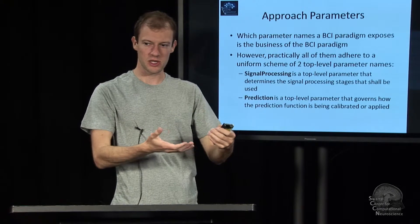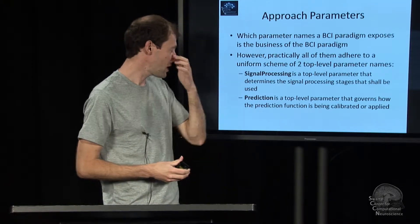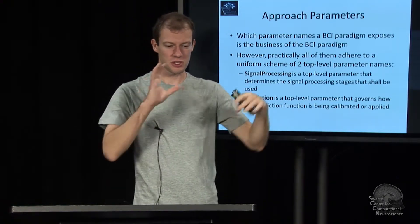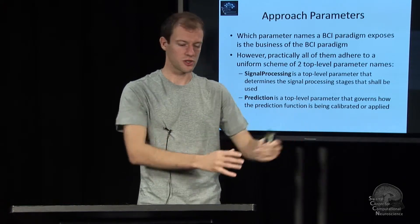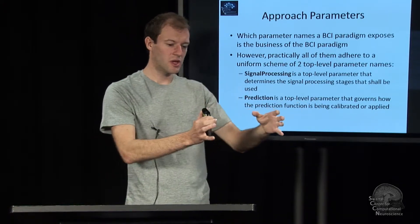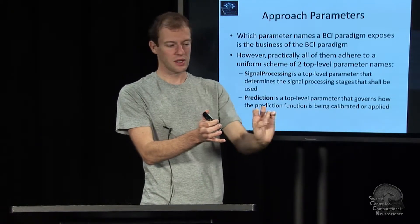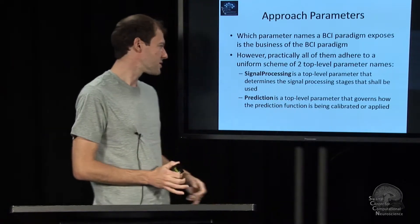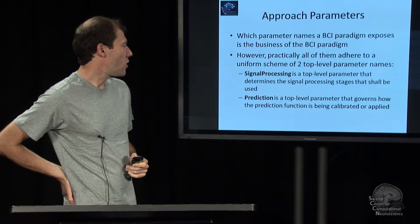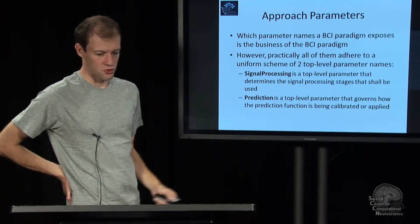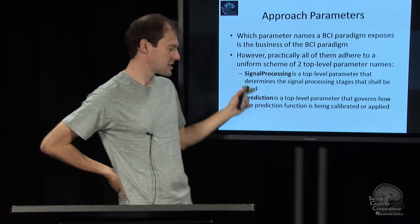The prediction parameter governs everything that happens at the prediction stage, the prediction function, and implicitly also how to calibrate that, how to determine the parameters, how to do the machine learning that gives rise to the prediction function and so on. It's usually these two, and the only exceptions are probably some custom user contributed things.